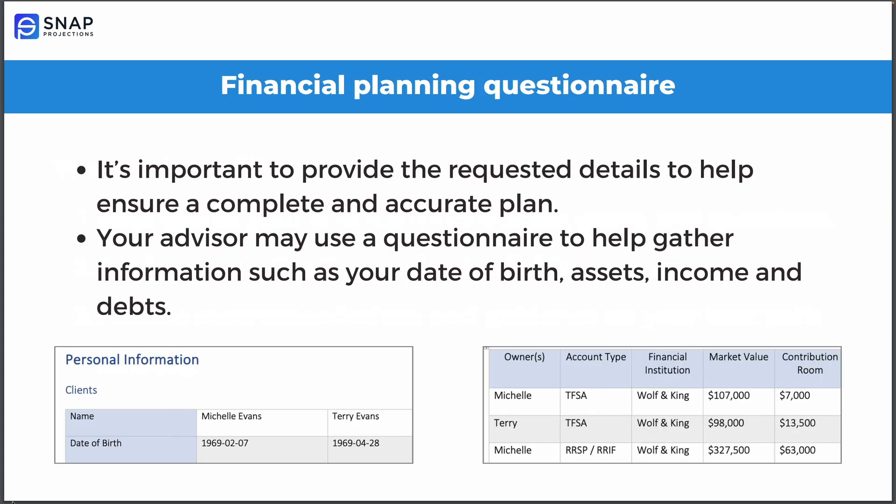The first step is to gather your financial information such as your income, assets, and debts, as well as your goals and any questions that you'd like to answer through the process. Your advisor may use a questionnaire to gather this information, and it's important to provide the requested details to help ensure a complete and accurate plan.